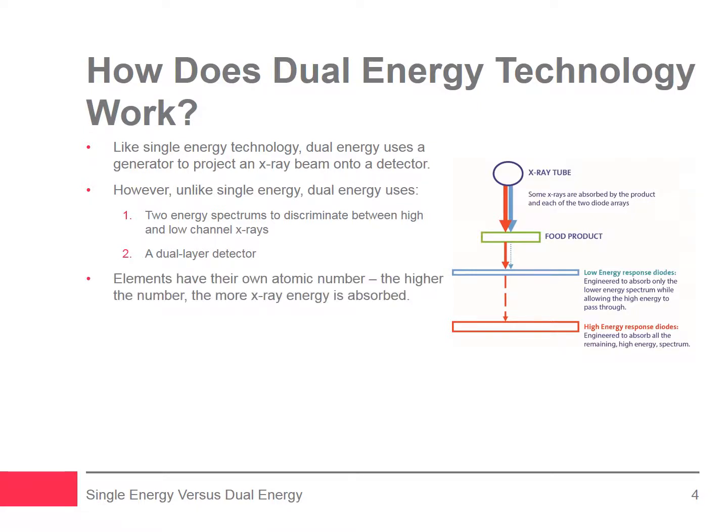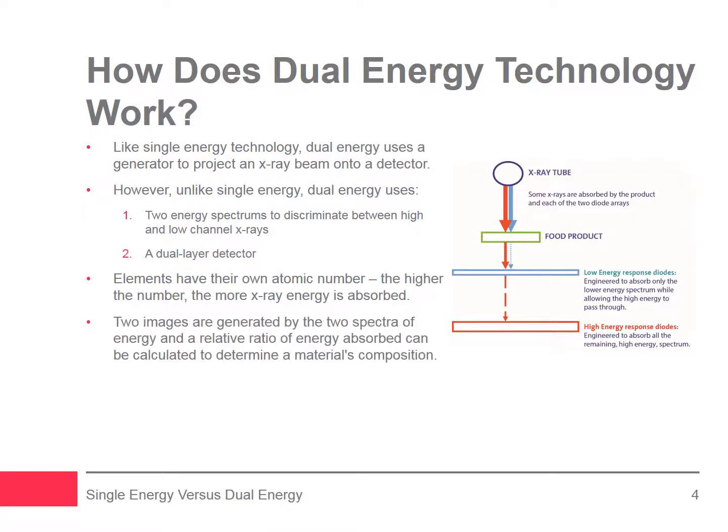Materials are made up of elements and each element has its own atomic number. For a given x-ray energy, as the atomic number increases, the element absorbs more x-ray energy and less passes through it. The amount of x-ray absorbance a given element has depends on the x-ray energy. As dual energy x-ray systems have a detector array that gives values at two different energies — high and low — these can be expressed as a ratio. Two separate images are generated by the two spectra of energy and a relative ratio of energy absorbed can be calculated to determine a material's composition. Contamination detection using dual energy technology is based on chemical composition or atomic number rather than just density variation, like single energy technology.